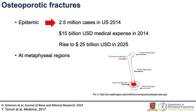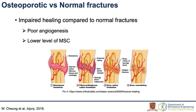It is particularly prevalent among older adults. In 2014, 2.5 million cases of osteoporotic fractures and 15 billion USD in medical expenses were reported in the United States. It is worth noticing that it occurs at metaphyseal regions instead of diaphyseal or apophyseal regions. When compared with normal fracture healing, the healing of osteoporotic fractures was found to be impaired, with poor blood circulation and decreased number of stem cells in bones.